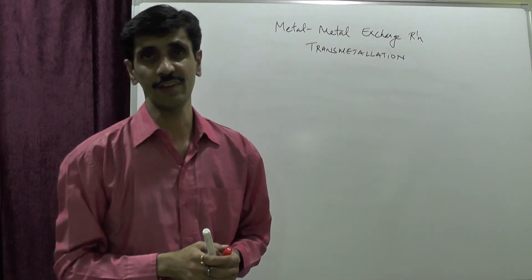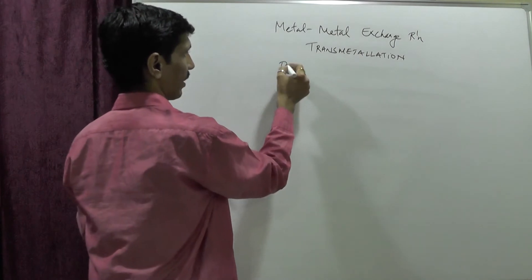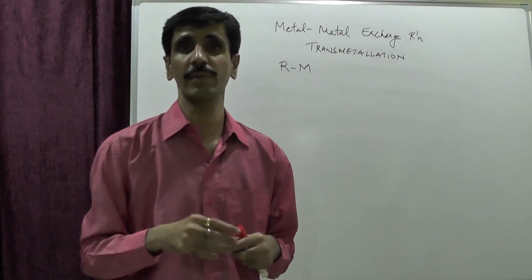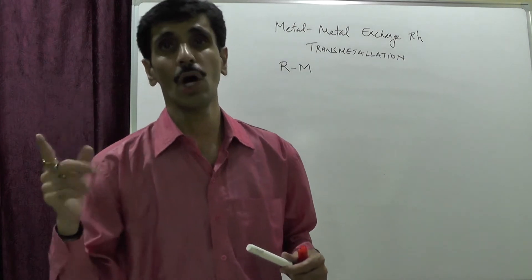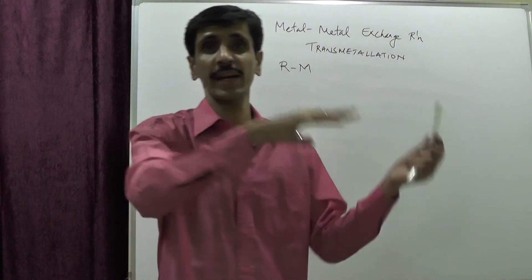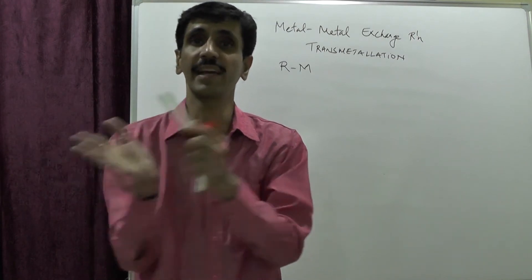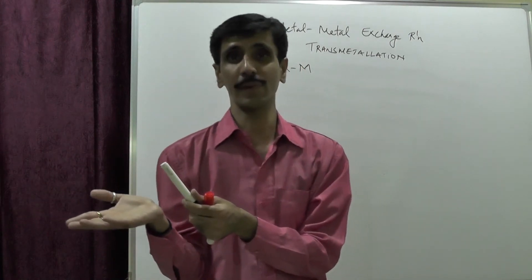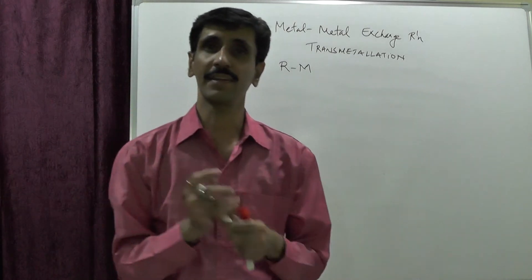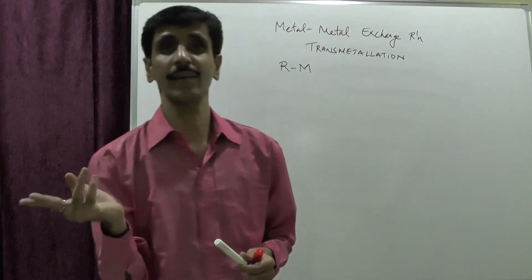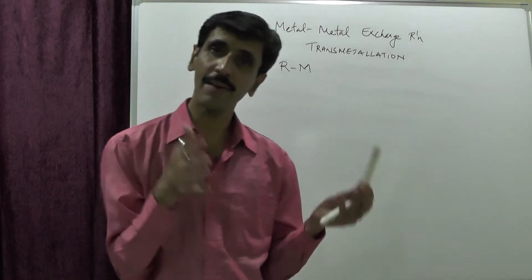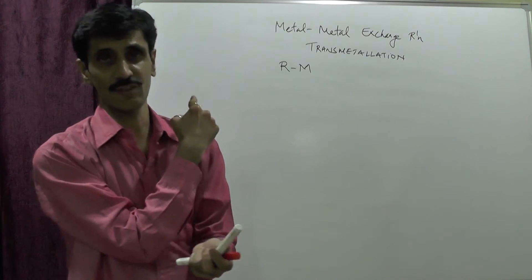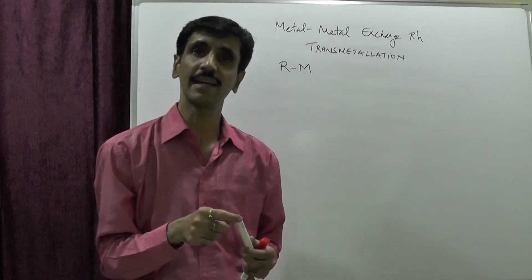The general reaction involves an organometallic compound R-M. As mentioned in part two, there are two ways to prepare organometallic compounds: preparing them entirely from scratch where no organometallic compound is present in the reactants, or converting one organometallic compound into another. This second approach applies here — we already have an organometallic compound R-M.